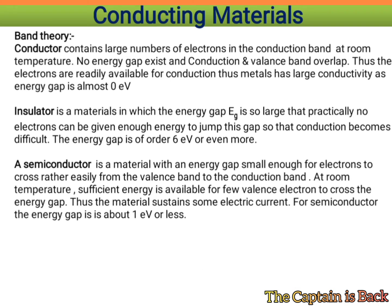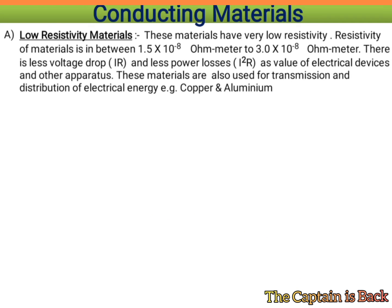A semiconductor is a material where the energy gap is small enough for electrons to cross relatively easily from the valence band to the conduction band. At room temperature, sufficient energy is available for a few valence electrons to cross the energy gap. For semiconductors, the energy gap is about 1 electron volt or less.